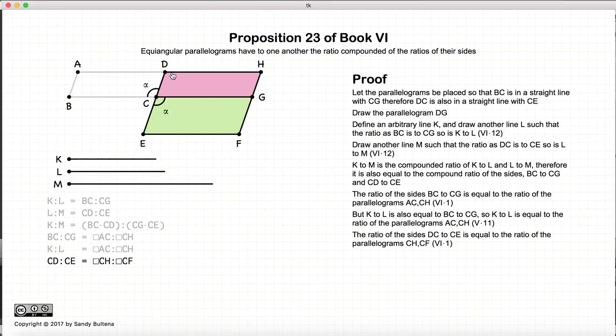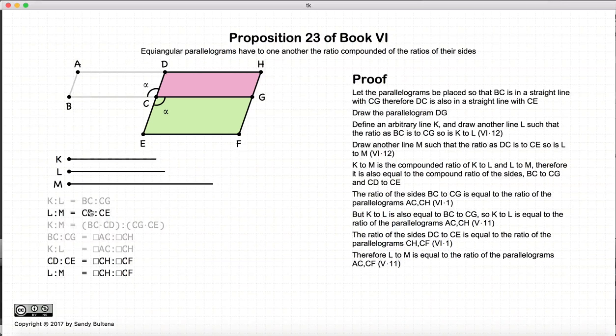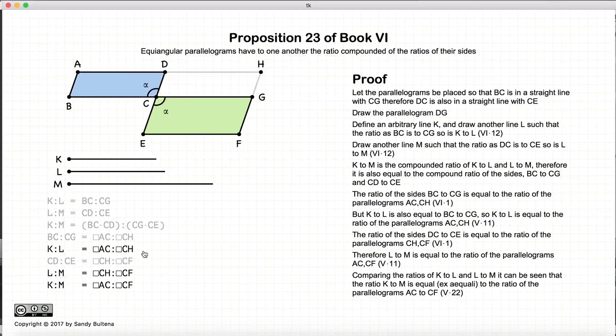Now let's do the same thing with DG and CF. And in this case, the bases would be DC and CE. So here are the bases and they are sharing a parallelogram. So again, the area of these two parallelograms will be proportional to the length of their bases. So CD to CE will be equal to the ratio of the area of this pink parallelogram to the green parallelogram. And again, L:M is equal to CD to CE. So L:M is equal to the ratio of the two parallelograms.